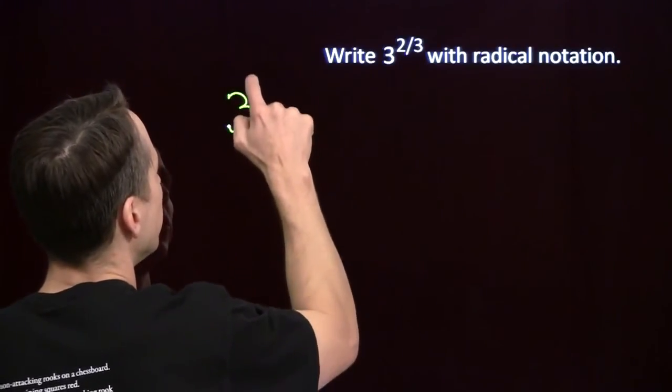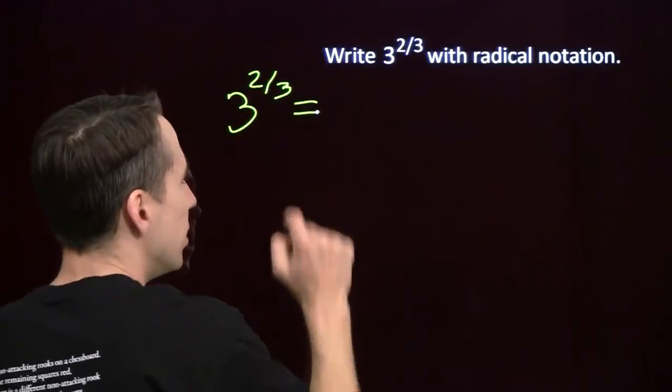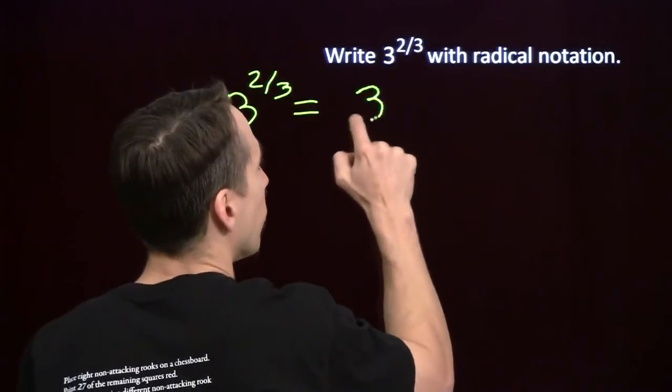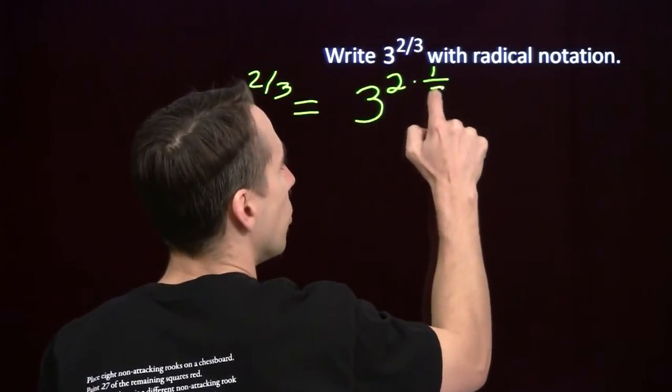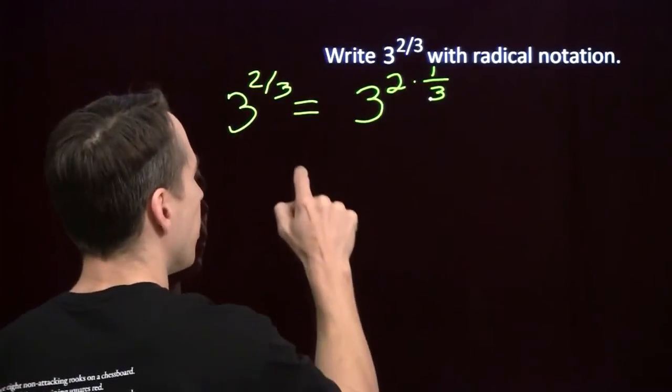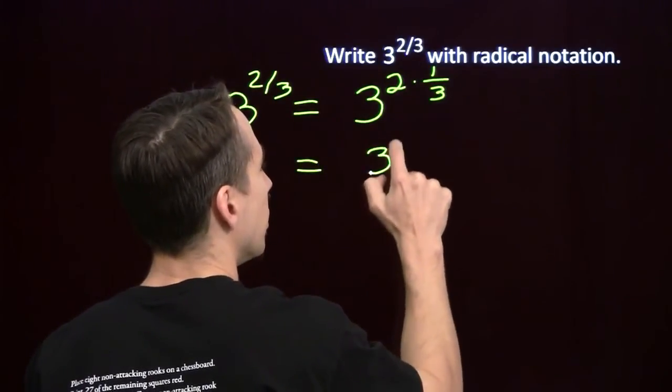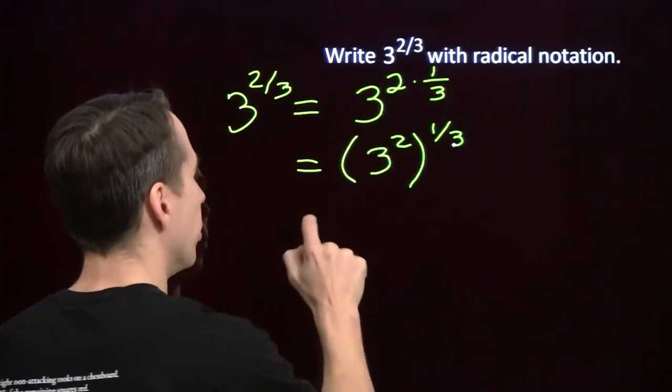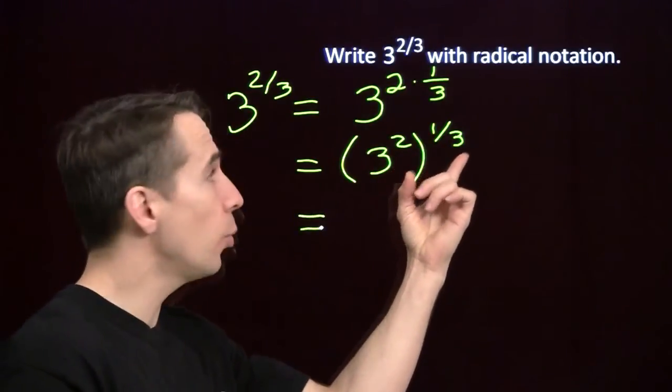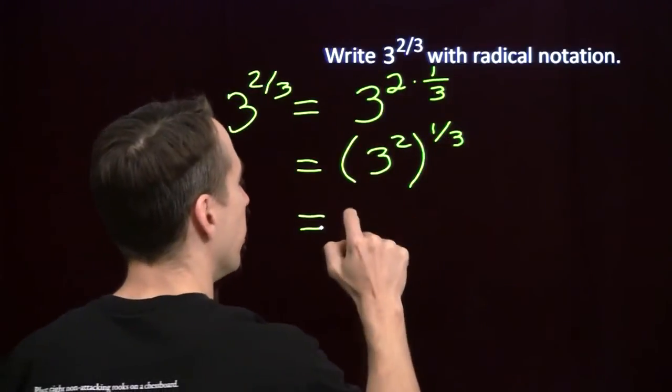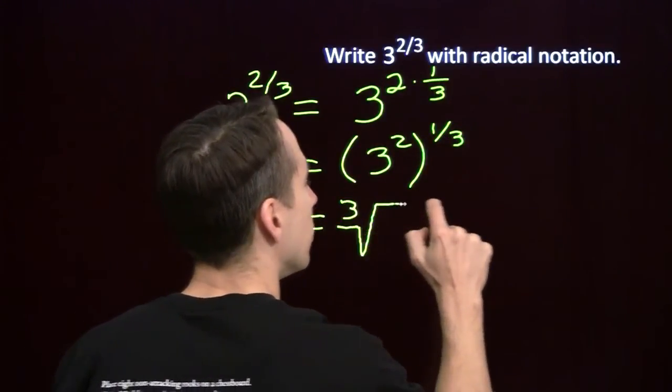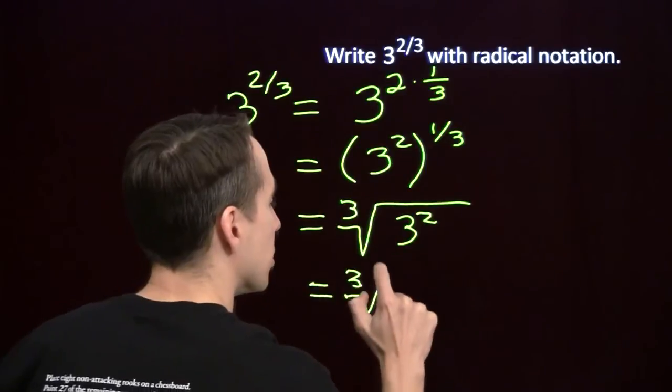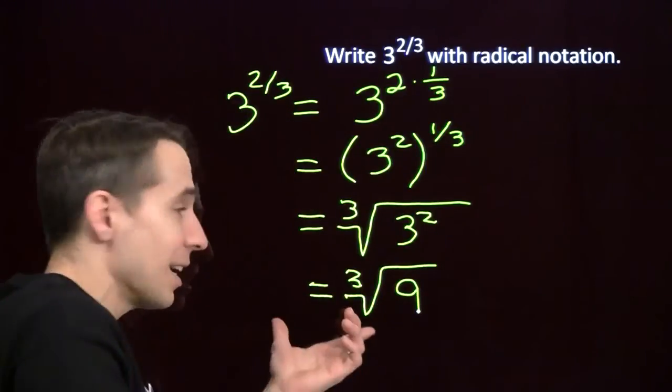So we'll start with this. We'll say 3 to the 2 thirds. And we know how to deal with things raised to the 1 third power. So I'm going to take out one of those handy exponent rules and rewrite this as something raised to the 1 third power. 2 thirds is just 2 times 1 third. So I can write this as 3 squared raised to the 1 third power. That's just our power of a power exponent rule. And we know how to deal with things that are raised to the 1 third power. We know how to write that with a radical. It's the cube root. And we put the 3 squared inside. So this is just the cube root of 9. And that's as simple as we can write it.